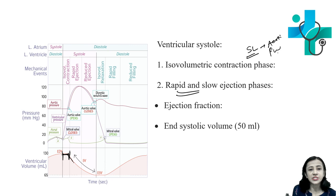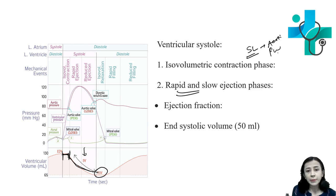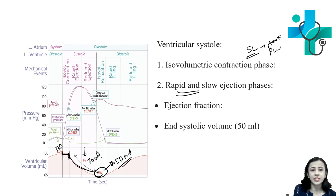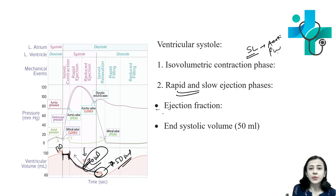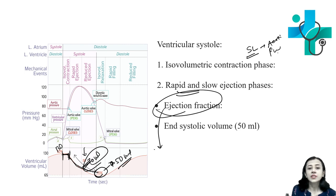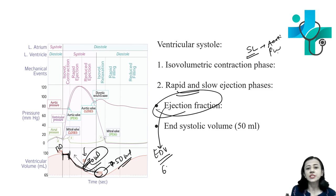During the ejection phase, blood is ejected out, so there is a decrease in ventricular volume. At the end of systole, the volume remaining in the ventricle equals the end systolic volume, which is 50 ml. This is because 70 to 80 ml — the stroke volume — is ejected from the 130 ml end diastolic volume. The ejection fraction is the fraction of the end diastolic volume which is ejected per beat, and that is about 60 to 65 percent.